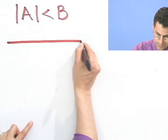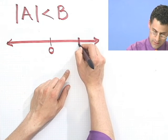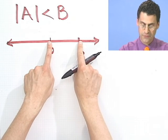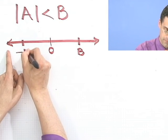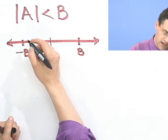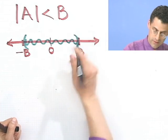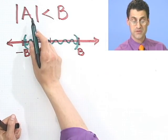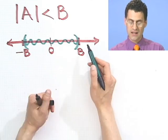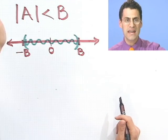Graphically, if here is 0, and here is B, and therefore negative B would be right over here — if the absolute value of A is less than B, then A would have to live somewhere inside here. Because all the values in here, positive or negative, have absolute values that are less than B. But once you go outside, the absolute value, no matter where you are, would exceed B. So if someone gives you an inequality with absolute values of this form, you can actually restate that inequality without any absolute values at all.